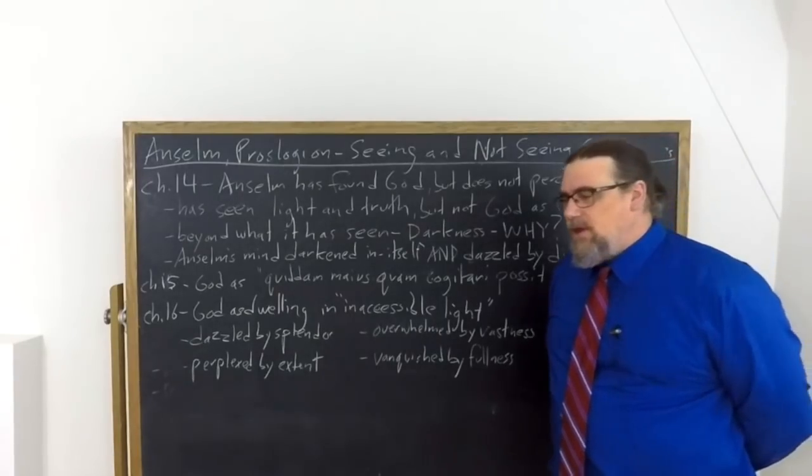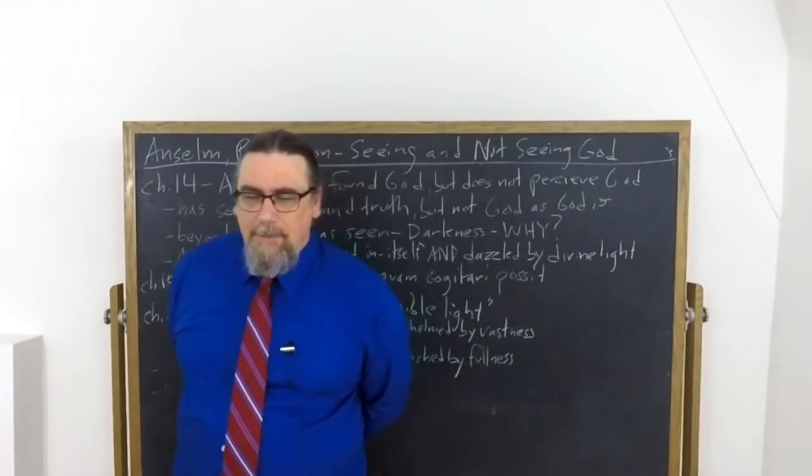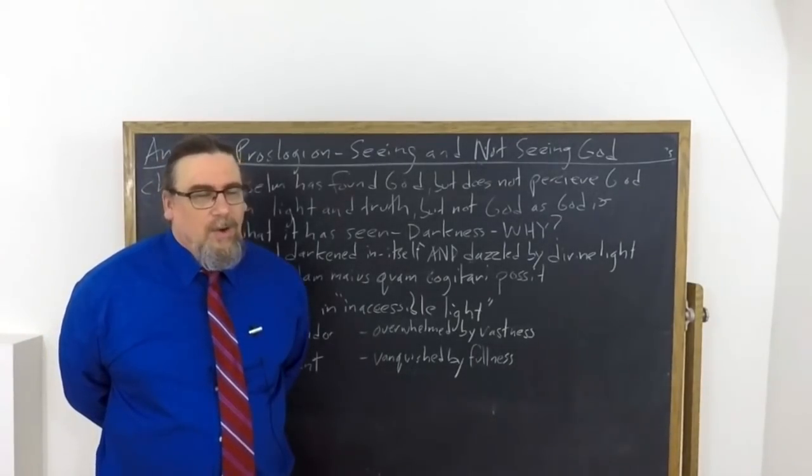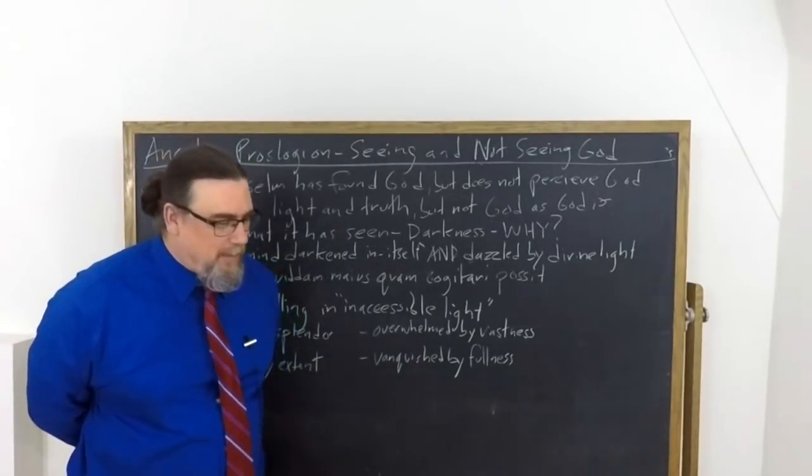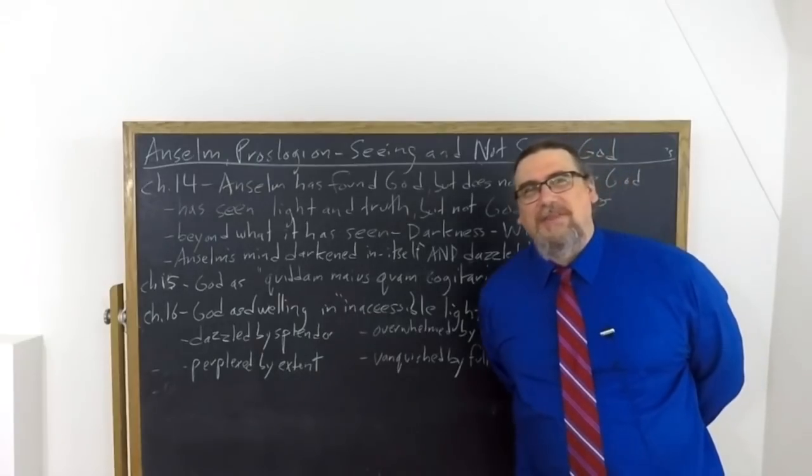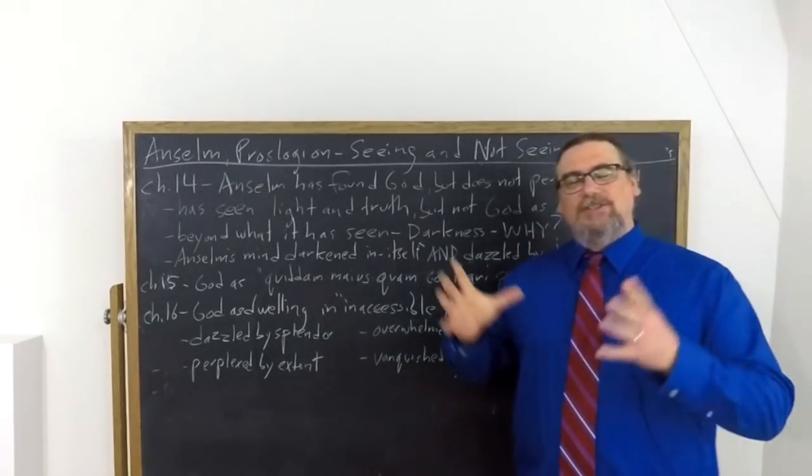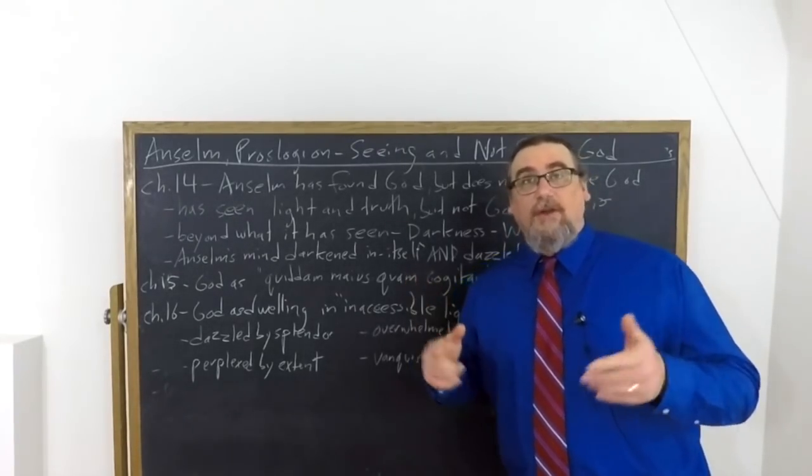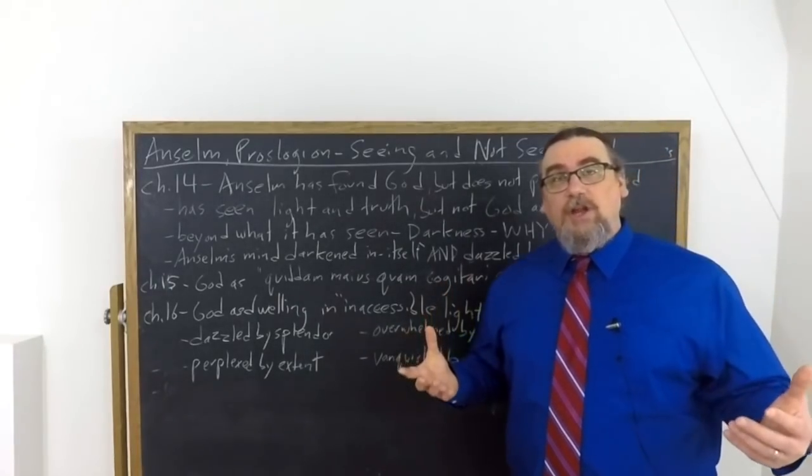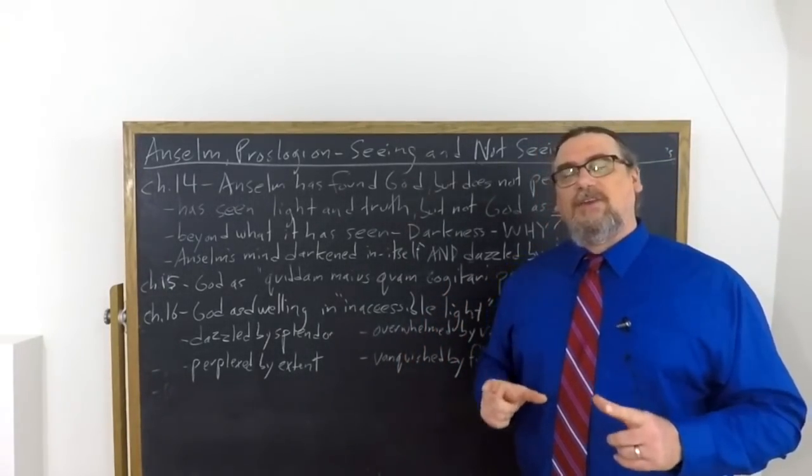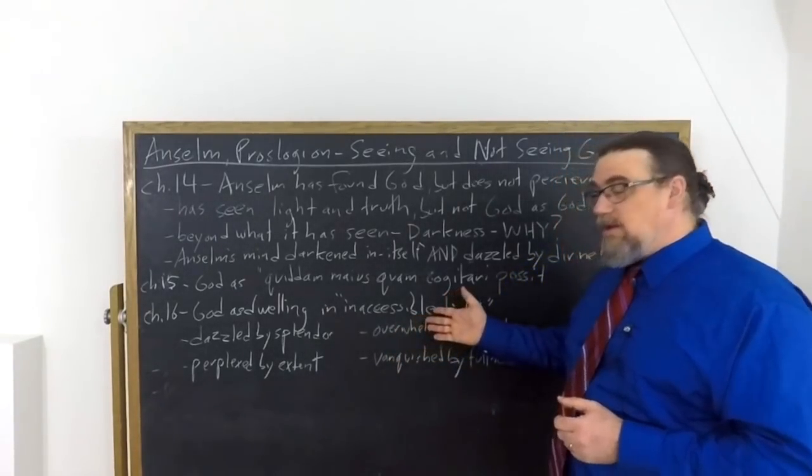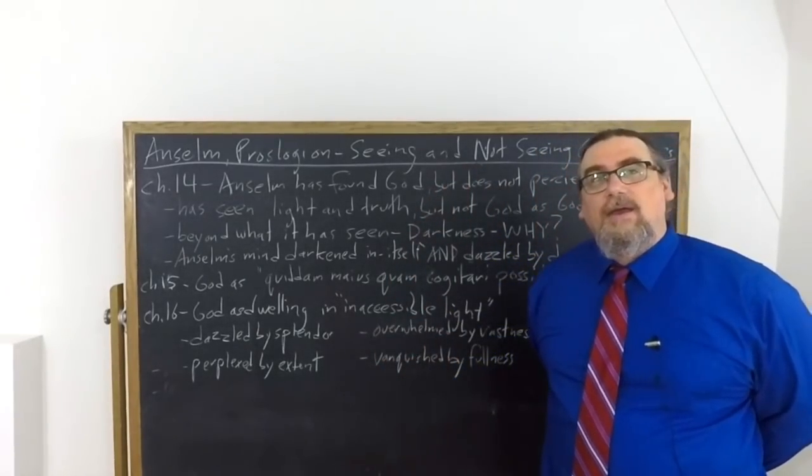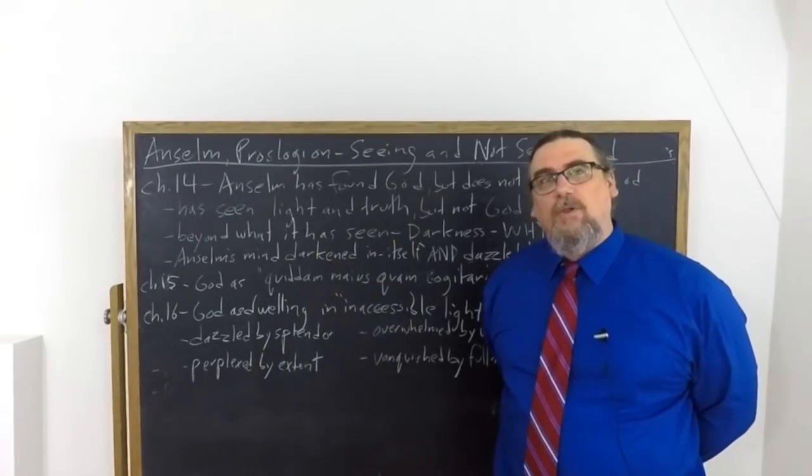And again, Anselm brings up these ways in which the human mind falls short. He talks about himself as being dazzled by the splendor of this light of the God that he's trying to conceive of, being overwhelmed by vastness, being perplexed by extent. And then this is one that I thought I wanted to take a little bit out of order from how Anselm himself arranges these rhetorically: vanquished by fullness. There is a surplus beyond surpluses that makes it impossible for the human being to fully, or even, what percentage should we establish? Whatever percentage we pick, it's going to be something lower than that. We're not able to take in the surplus that is the divine. So whatever conceptualization that we're able to formulate of it, and Anselm is formulating quite a coherent and rich conception in the Proslogion, that by itself is still inadequate to what God is. And that is why we can use this metaphor of dwelling in inaccessible light.